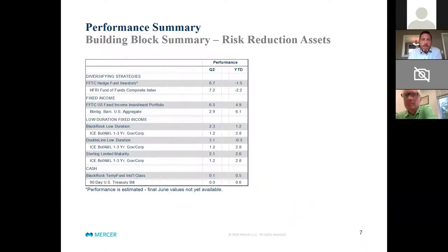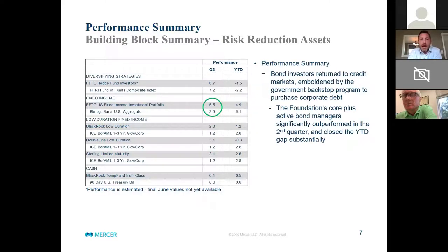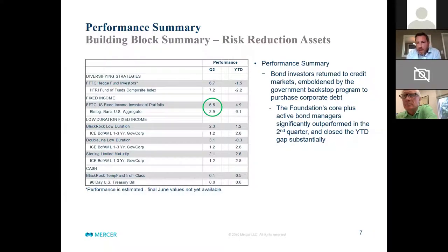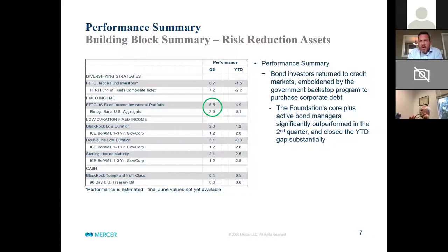On the risk reduction side of the portfolio — our diversifying strategies: hedge funds, fixed income, low-duration fixed income — intended to balance out the dominance of equity exposures. We saw really good absolute and relative returns on the fixed income side. Bond investors returned to credit markets they had largely abandoned at the end of the first quarter, largely driven by government intervention, central bank backstops, and the Fed agreeing to purchase large amounts of corporate debt. That translated to fairly good performance for the foundation's core-plus active bond managers, who outperformed broader fixed income markets by about 350 basis points for the quarter.